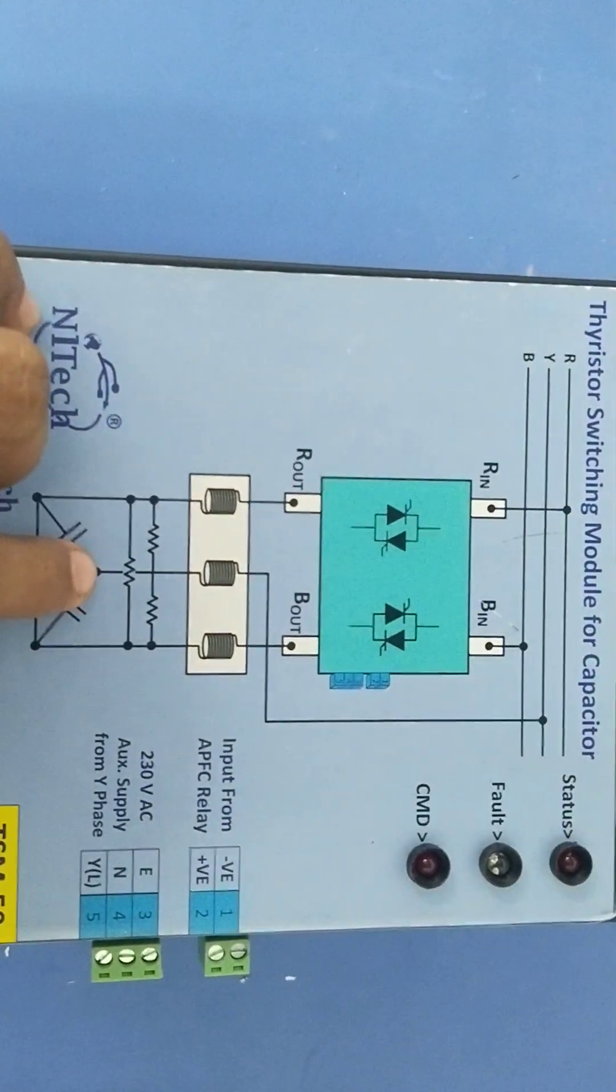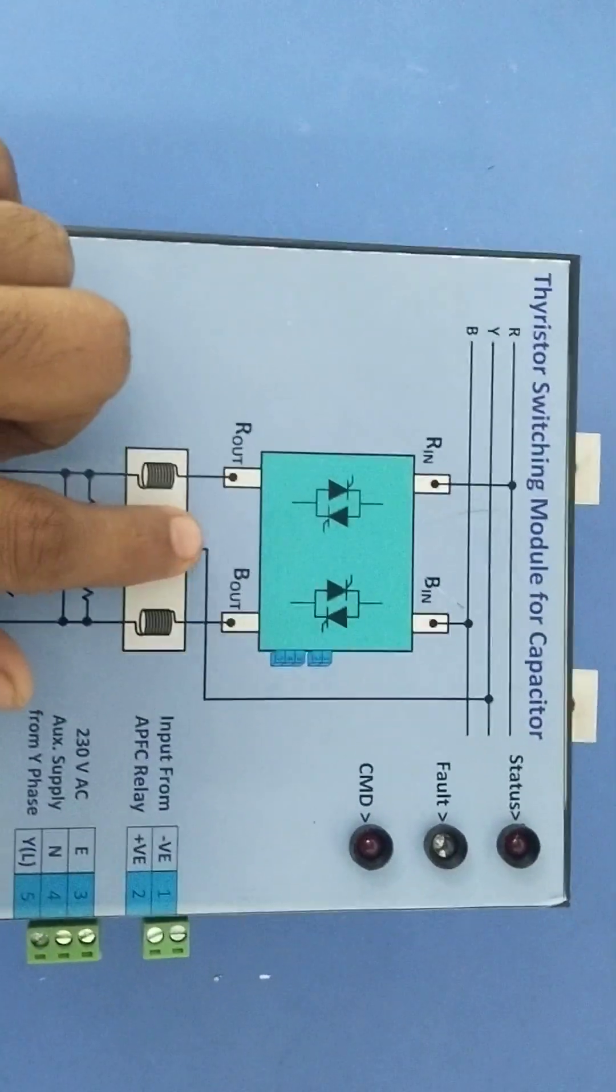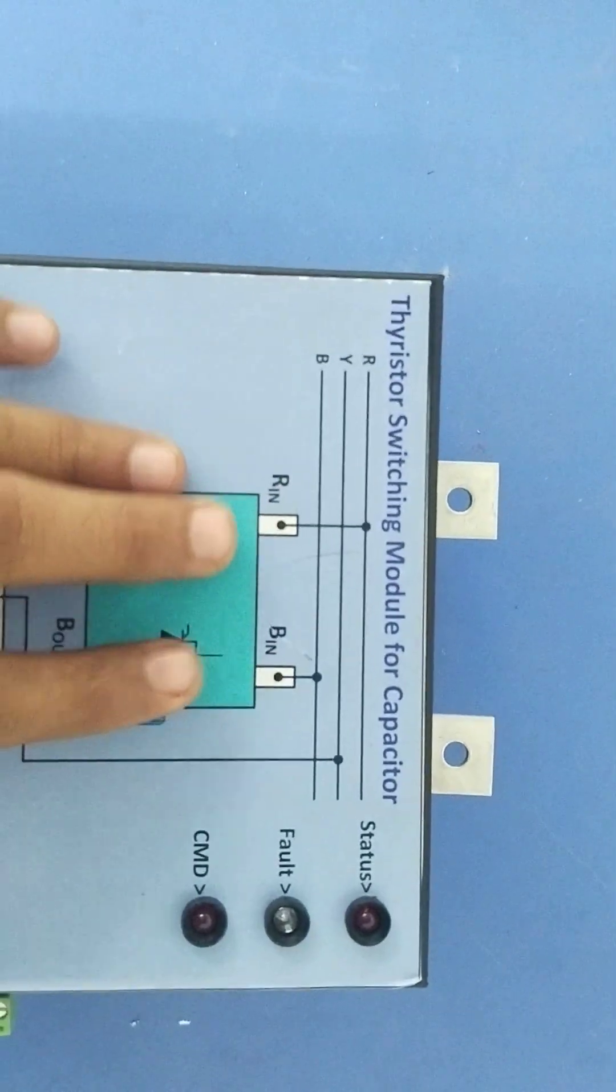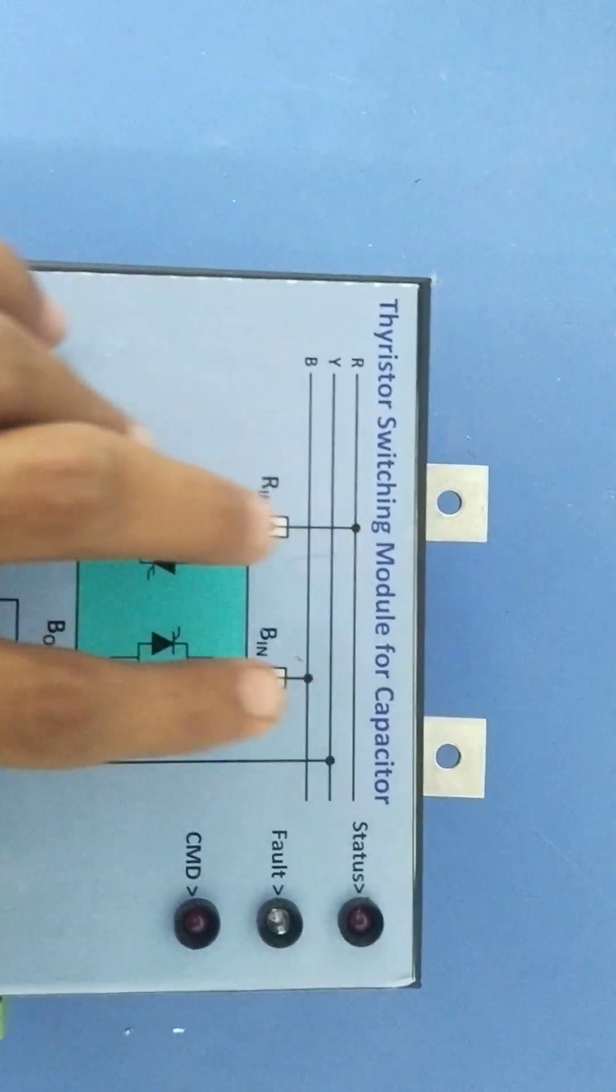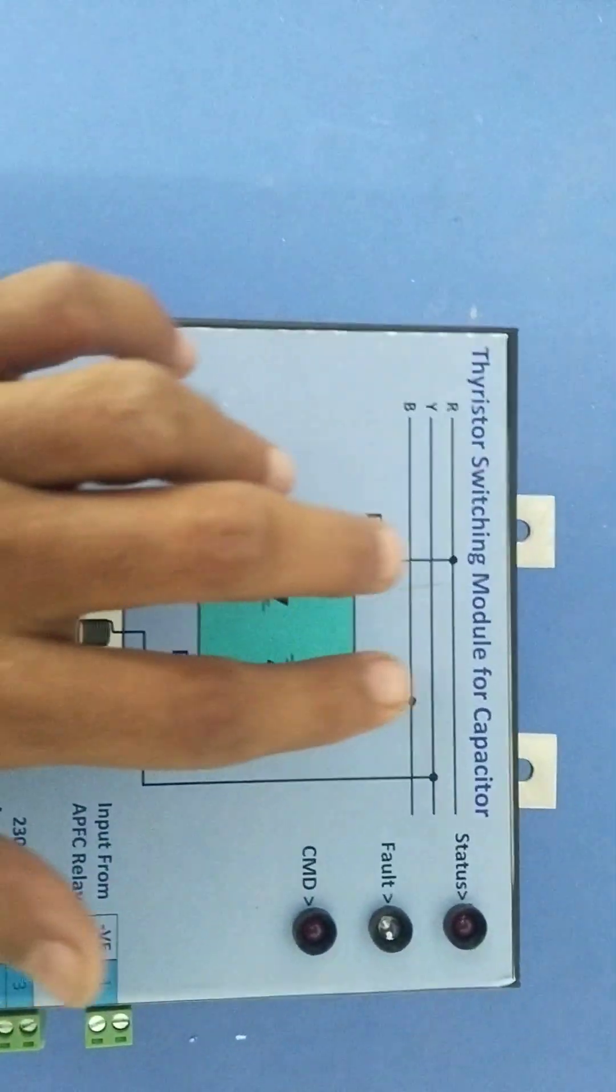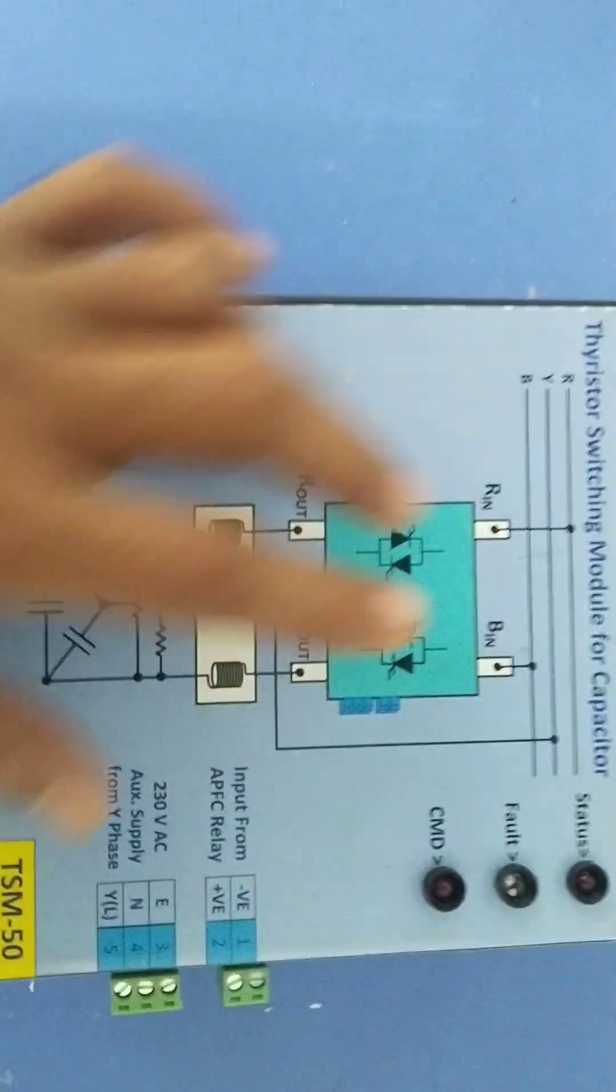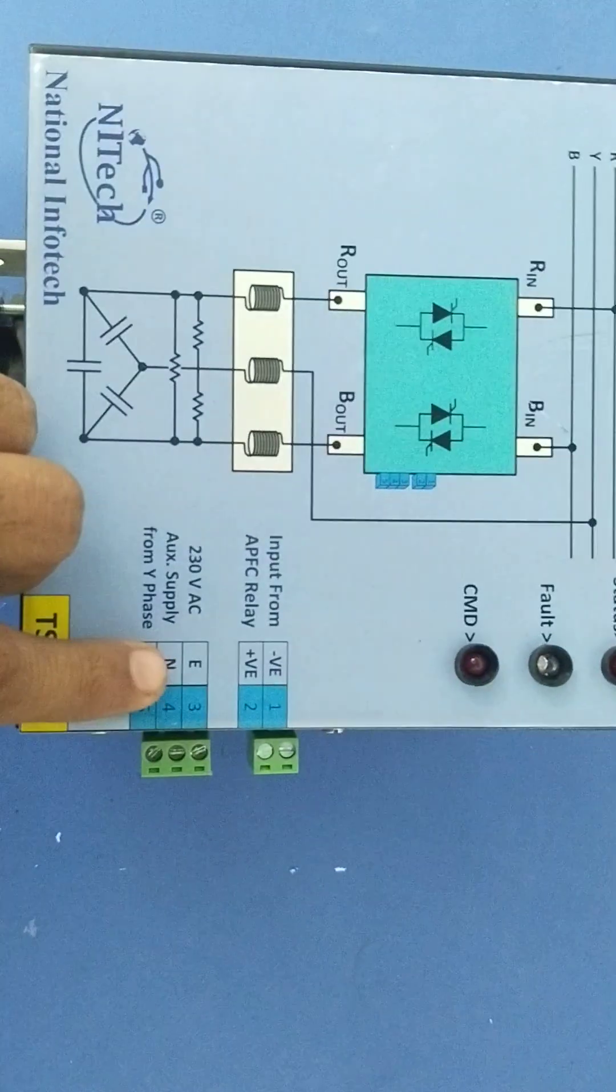So the module is connected between R and B phase of mains and R and B phase of your capacitor module. Now for the remaining terminals for operation of the internal circuits...